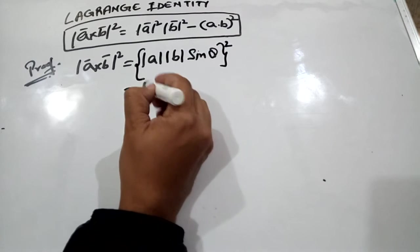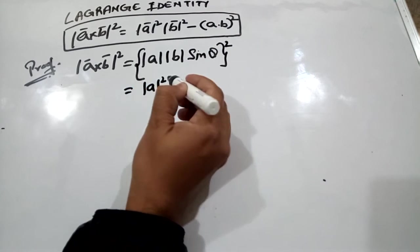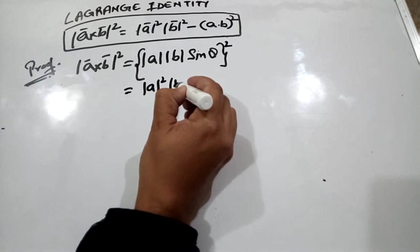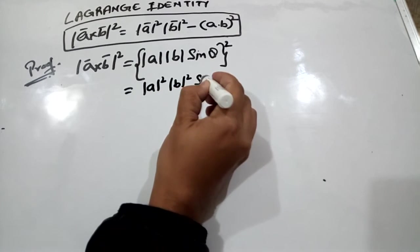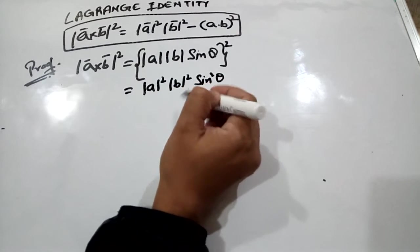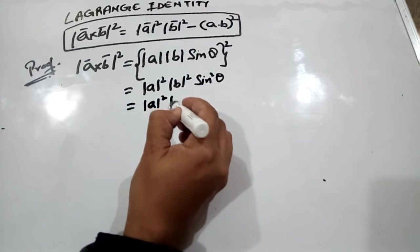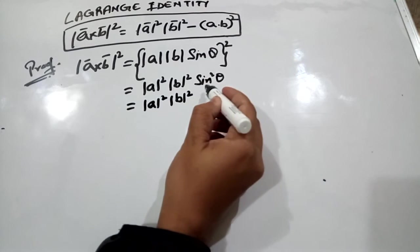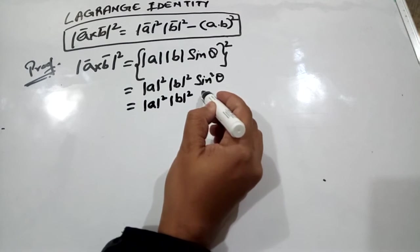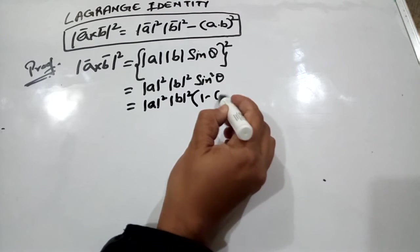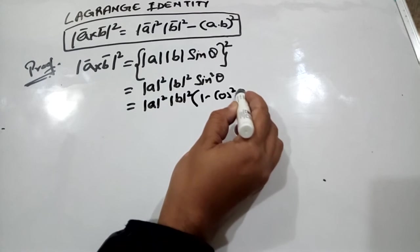To this we can write it as mod of a square mod of b square into sine square theta. Now mod of a square mod of b square, to this sine square theta we can write 1 minus cos square theta.